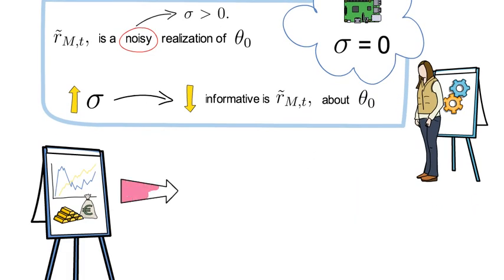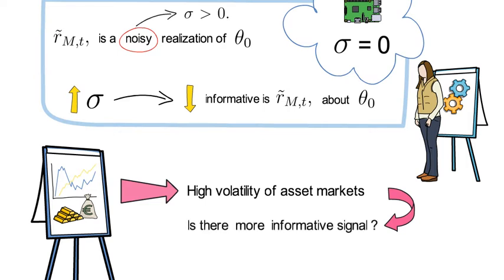In finance, however, we have to live, at least partly, with the high volatility of asset markets. Yet what we learn from that insight is that you should always ask yourself whether there is a more informative signal out there that you could use to learn about the unobserved quantity of interest.